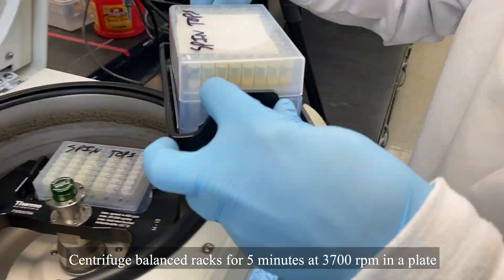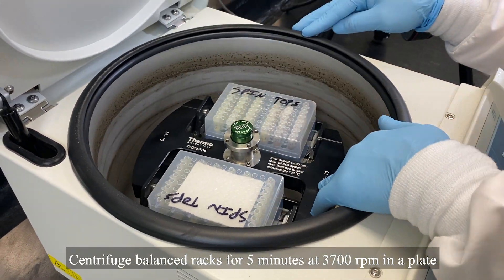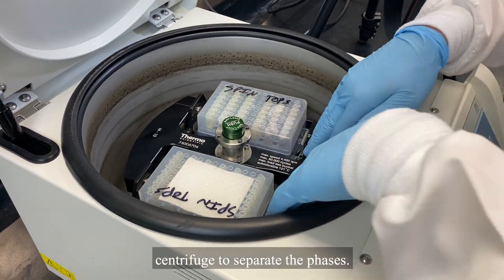Carefully balance the paired spin racks with a Harvard trip balance or scale. Centrifuge balanced racks for 5 minutes at 3700 RPM in a plate centrifuge to separate the phases.